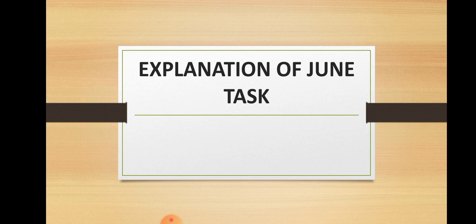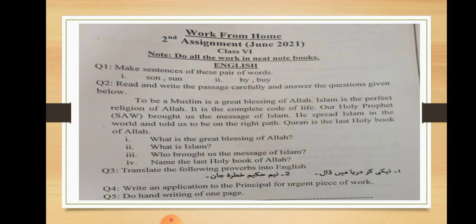Now for the June task, there are 5 questions to do in your neat notebooks. Question 1: Make sentences using pairs of words — words that have similar pronunciation but different spellings and meanings. Question 2: Read and write the passage carefully and answer the questions given below it — read the passage attentively, write it in your neat notebooks, and answer the questions after reading carefully.